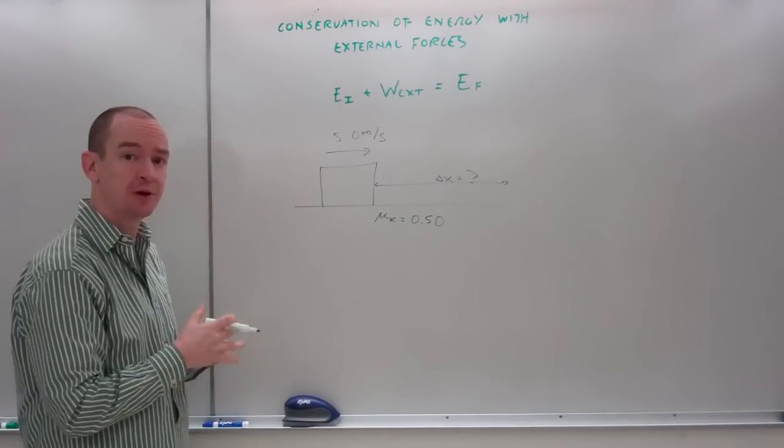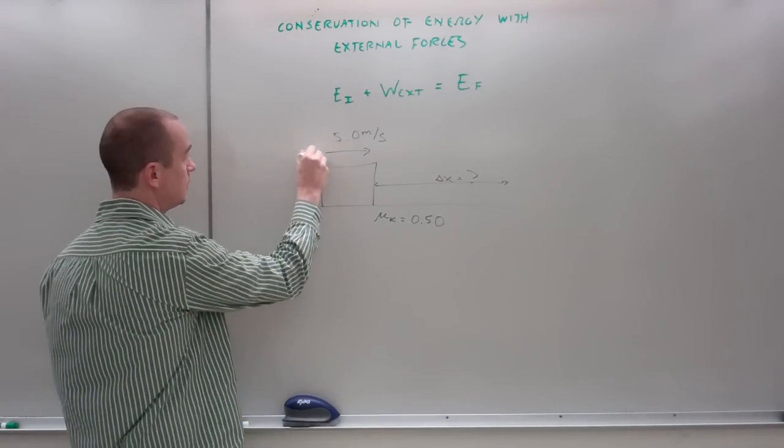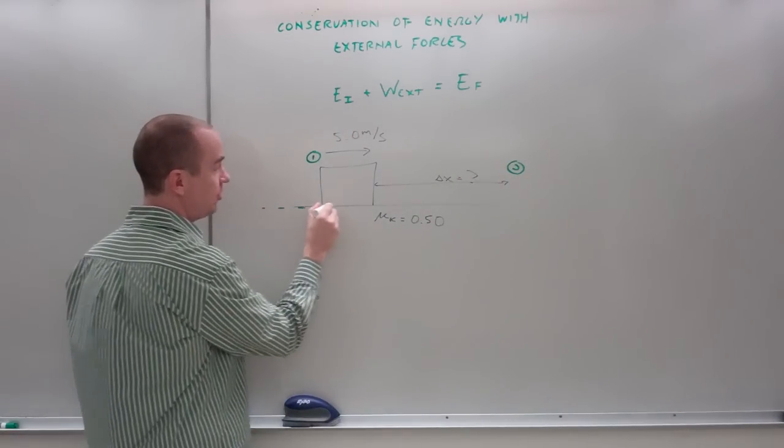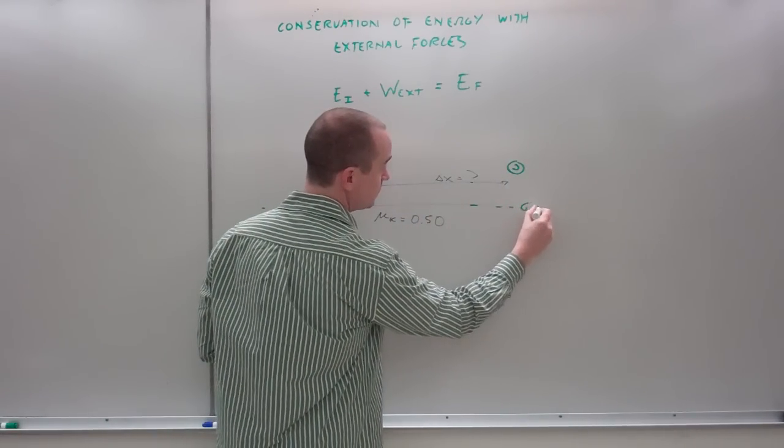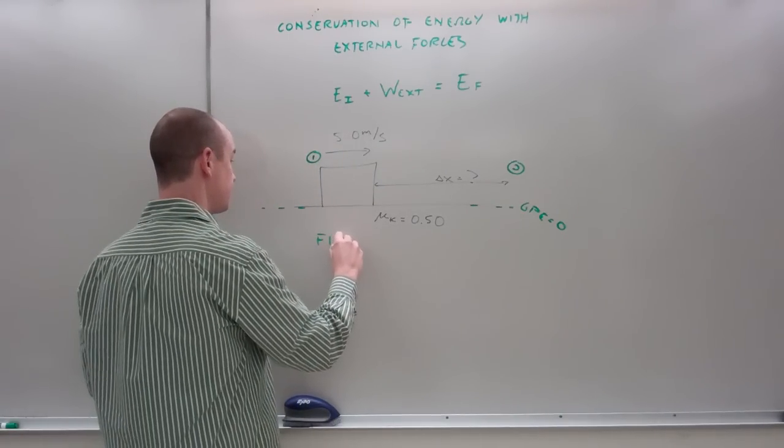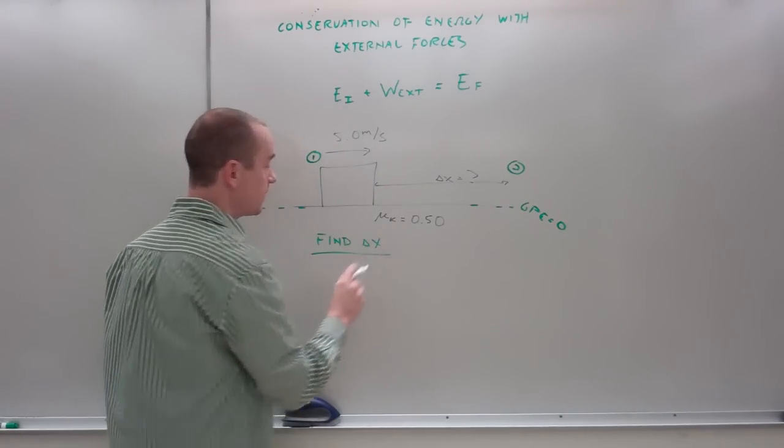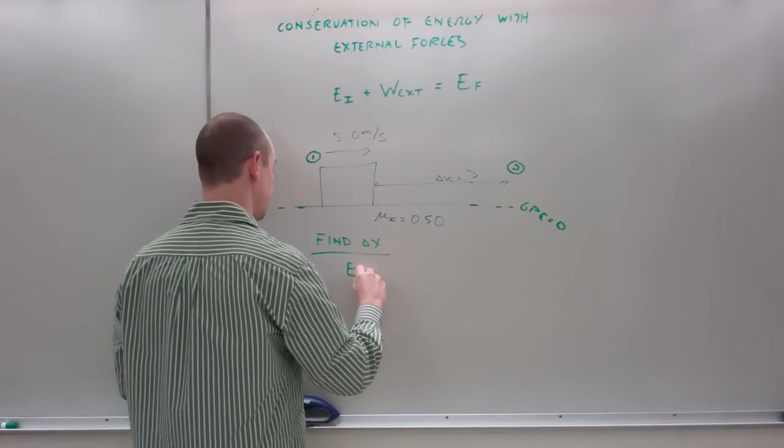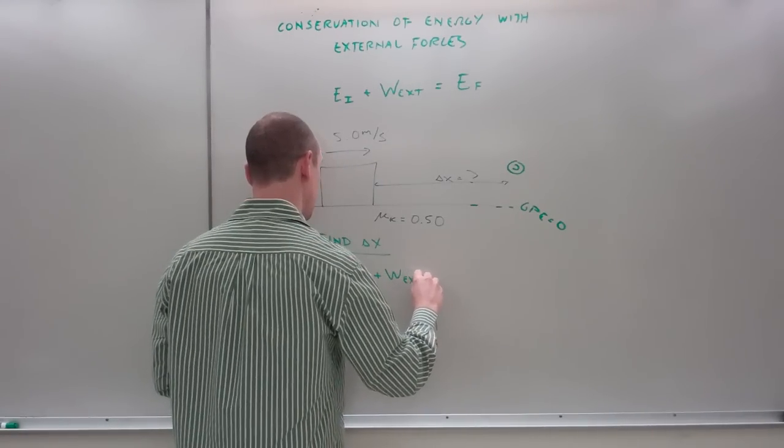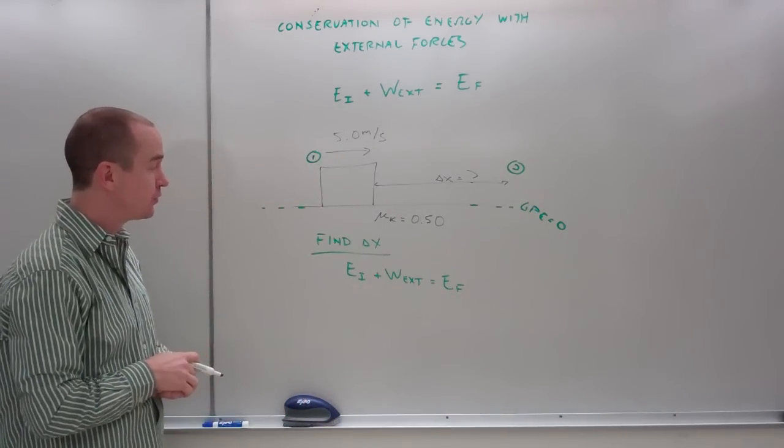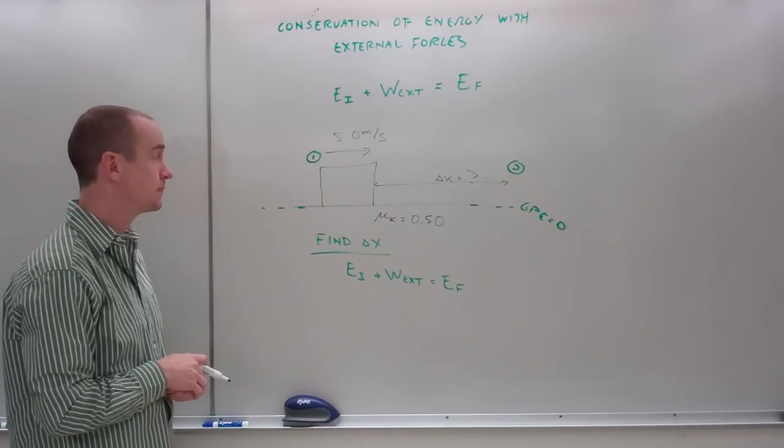First, I'll pick a before and after. Talk about there, and there. Here's my GP equals zero line. I'm finding change of x. EI plus work external equals EF.